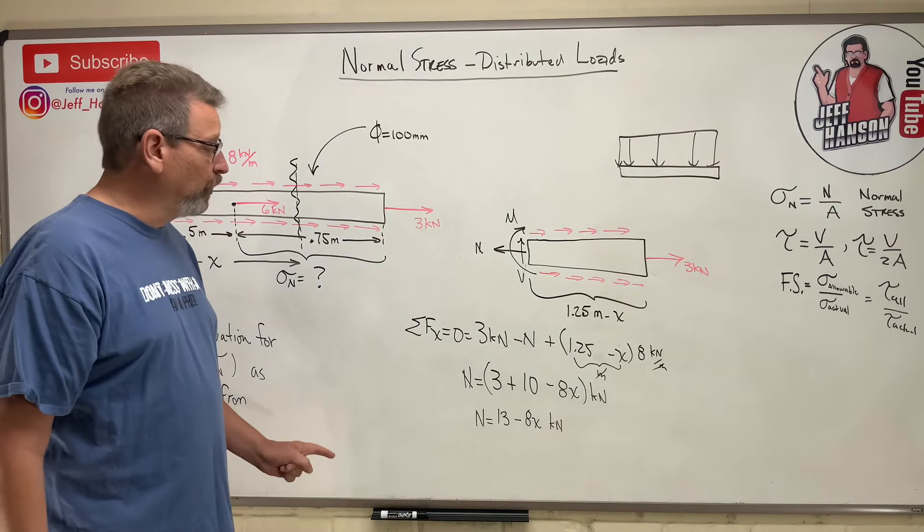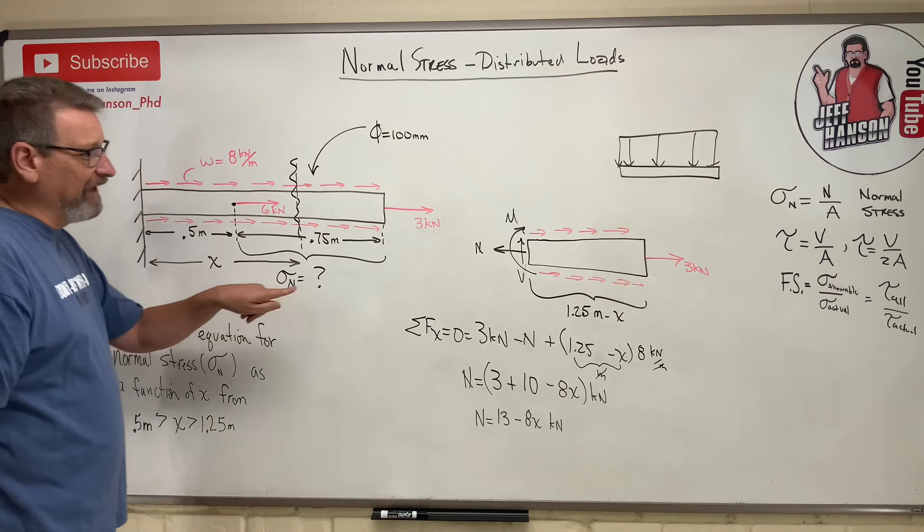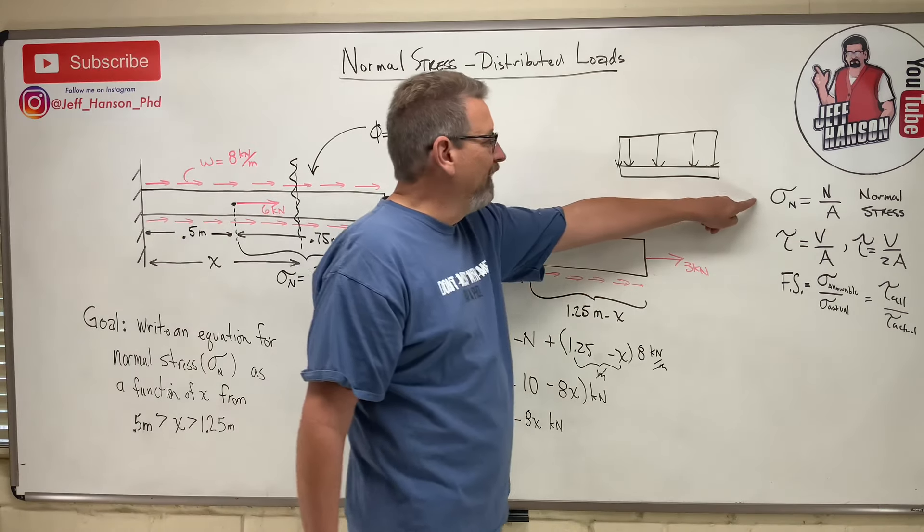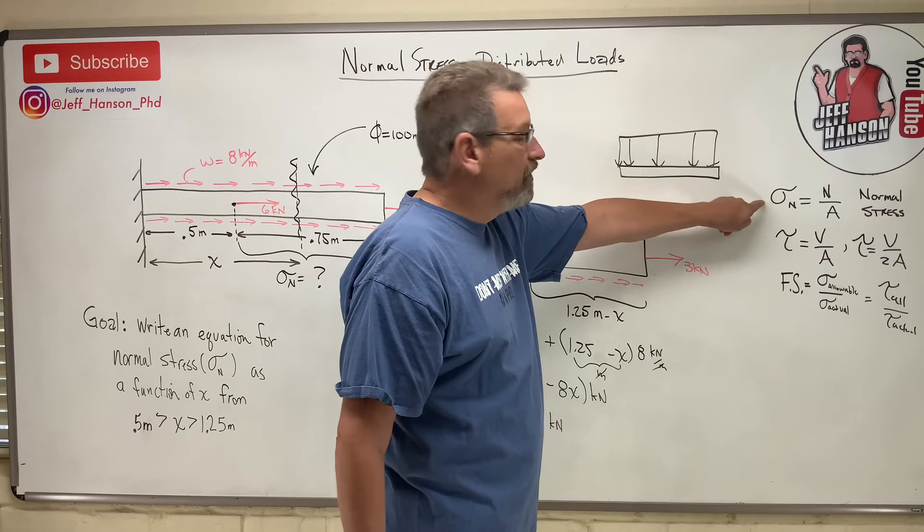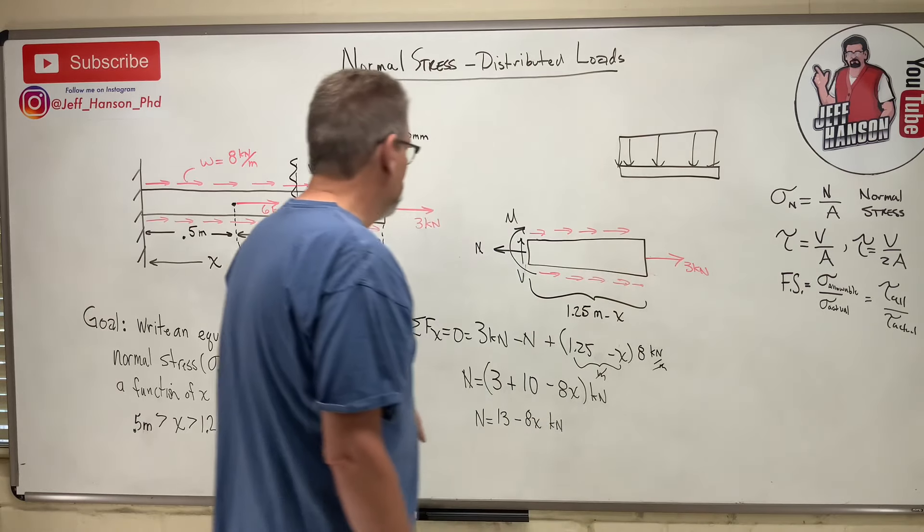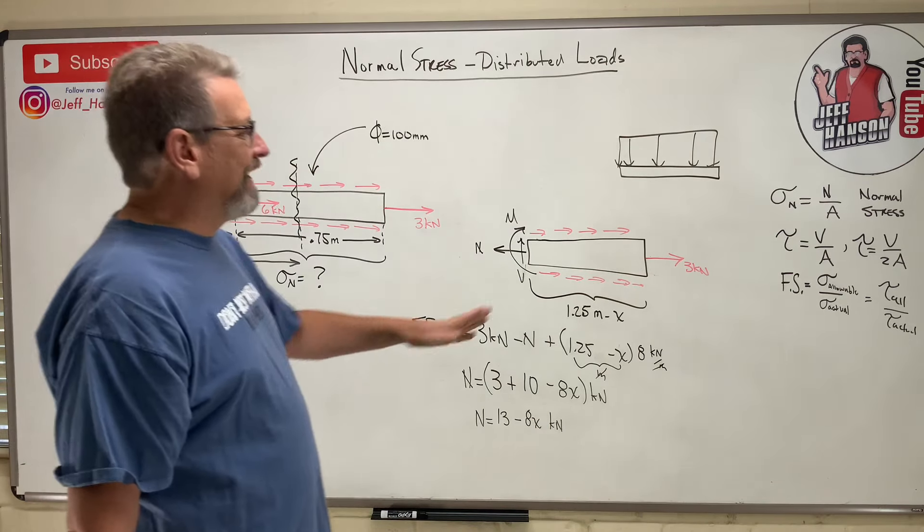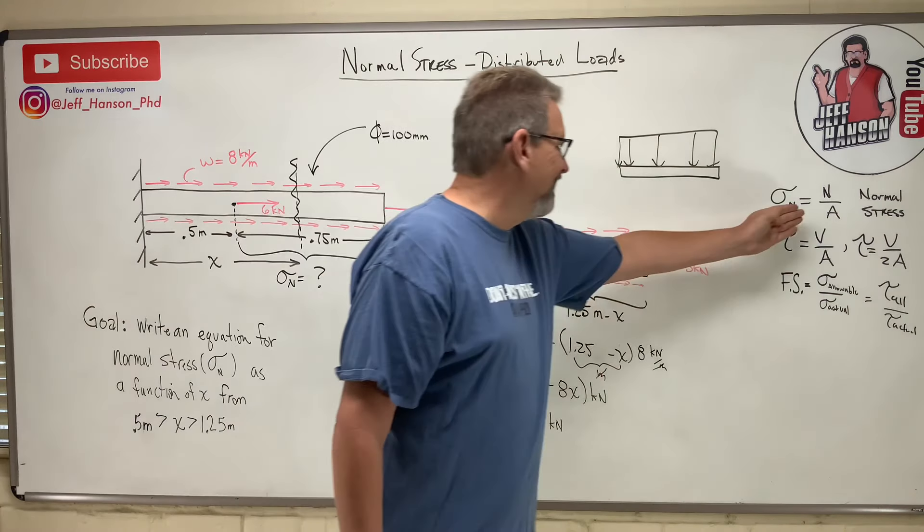Now, they want an equation for sigma n. We know, well, we know that, don't we? It's right there. So we're going to use that equation. Now, do we know the area? We know n. There's n right there. Bam! What is a?